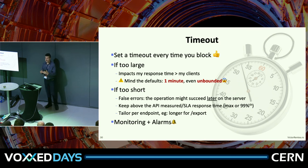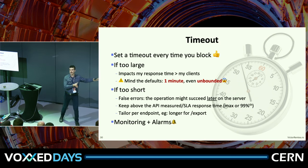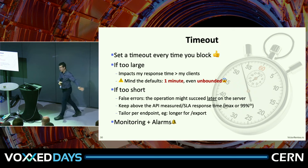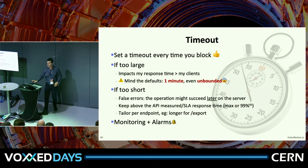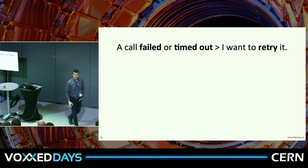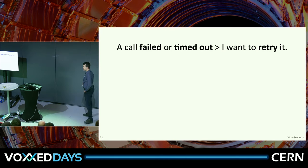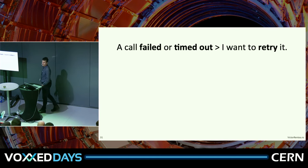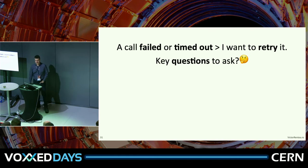One scenario I found: they had timeouts configured for another service, but then that service changed its implementation and added 50 milliseconds to their response time. Suddenly they were timing out every call. You need to detect such cases as fast as you can — raise alarms, report metrics on how many timeouts you had in the last five seconds. So we have a call that failed or timed out — now let's retry. Before you retry, you need to answer a couple of questions.